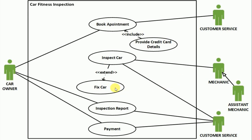Once inspection is done, the inspection report is given by the mechanic to the customer service representative — so this use case also associates customer service. Then the inspection report is delivered to the customer, where the mechanic has nothing to do, as they have already handed it to customer service. Customer service then forwards it to the car owner, and upon that the customer makes payment, which is processed by the customer service representative. So this use case has associations with both the car owner and customer service.